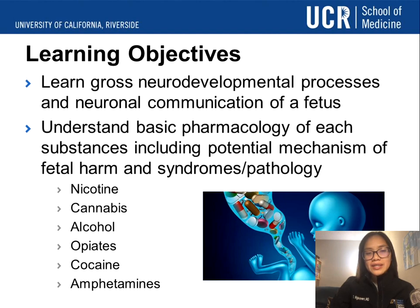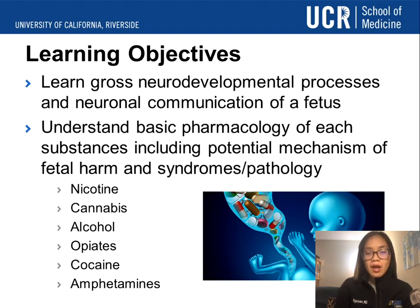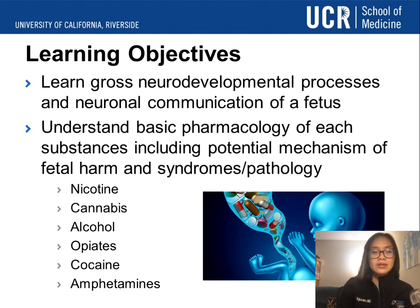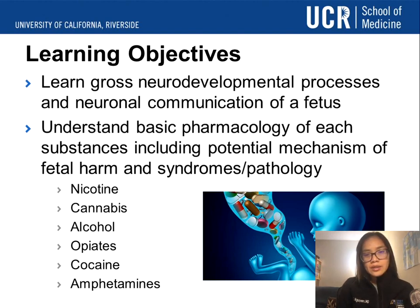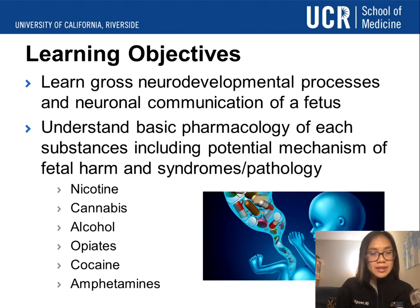Our learning objectives today will be to learn gross neurodevelopmental processes and neuronal communications of the fetus. We'll talk about basic pharmacology of each substance, including potential mechanisms of fetal harm and consequent syndromes and pathology. The substances we're going to focus on include nicotine, cannabis, alcohol, opiates, cocaine, and amphetamines.